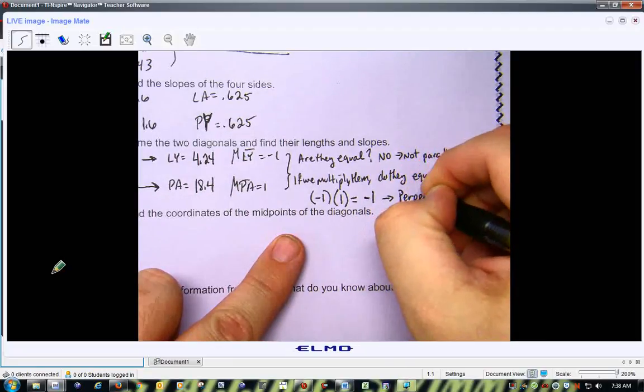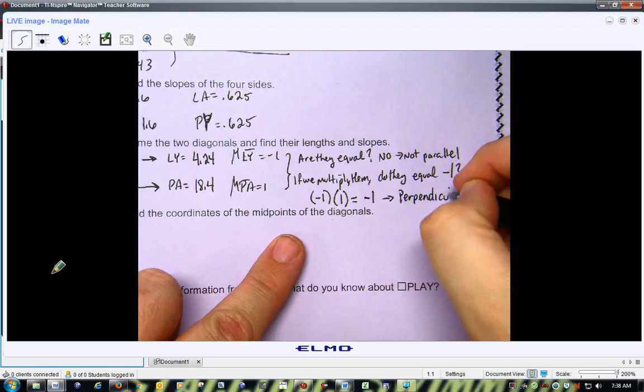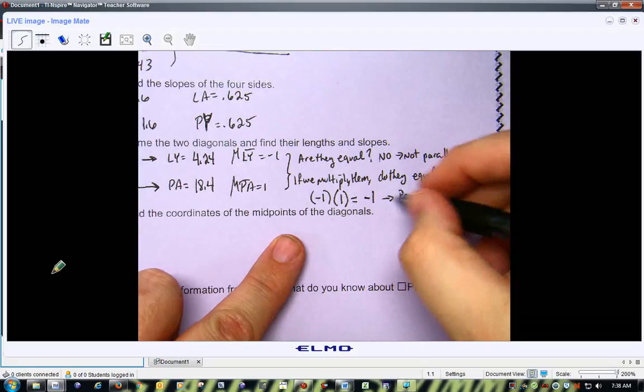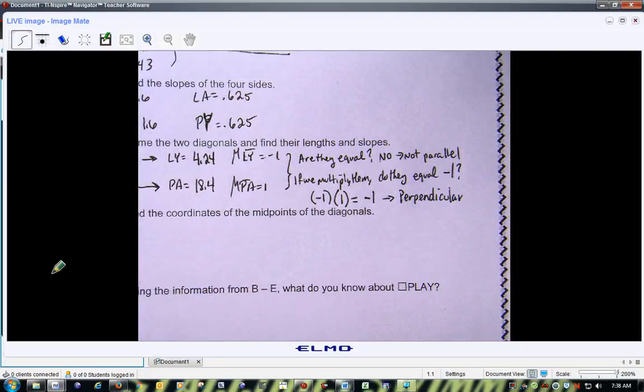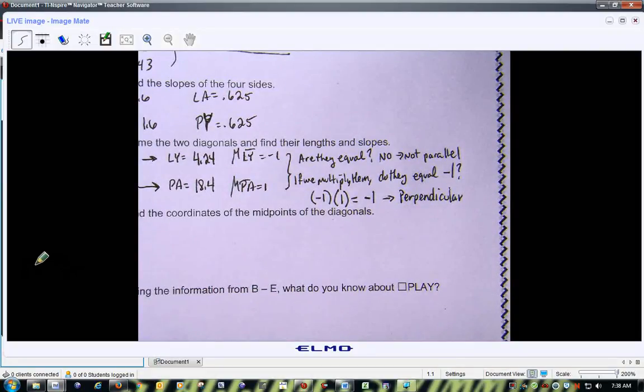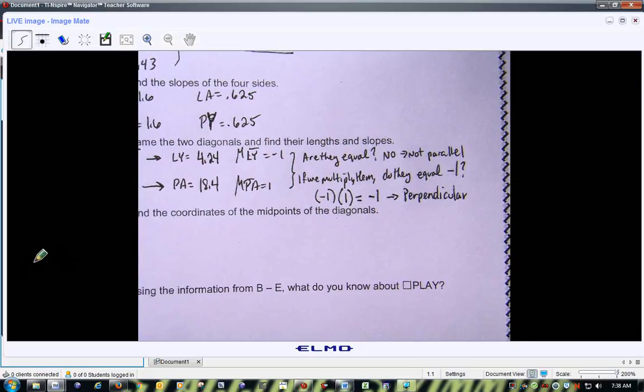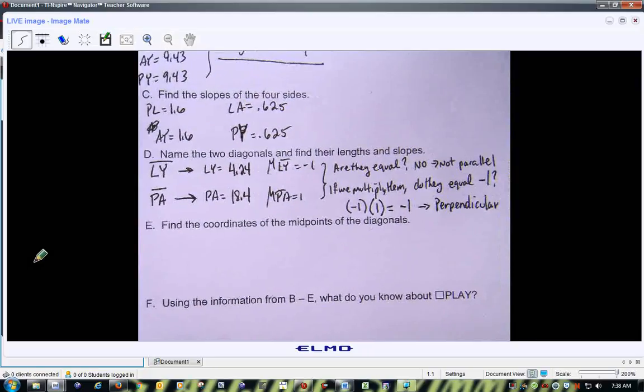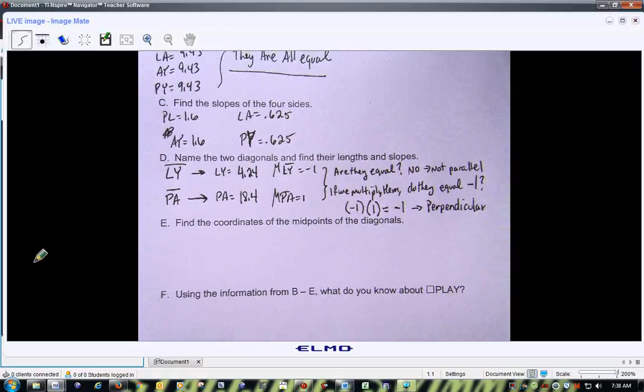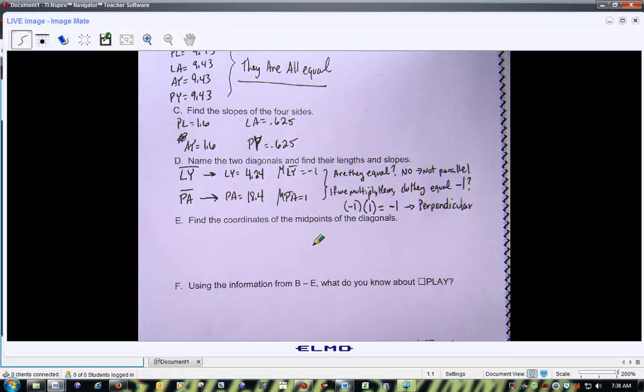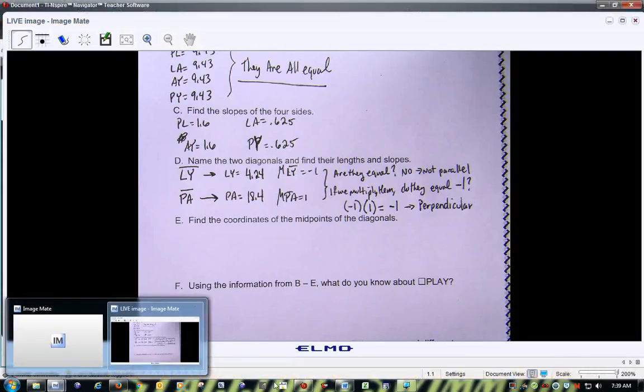So this tells me that they're perpendicular. If they're perpendicular, their slopes, then when you multiply them, are negative 1. Now we've got to find the coordinates of the midpoints. So, let's go back to this.